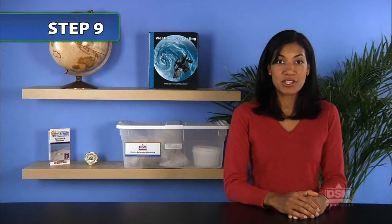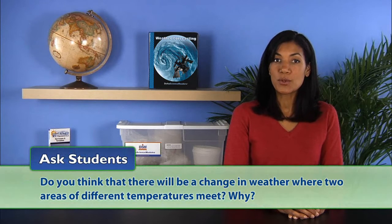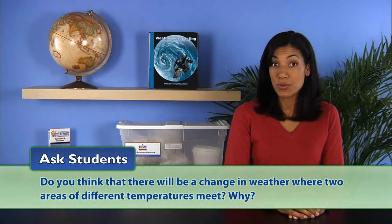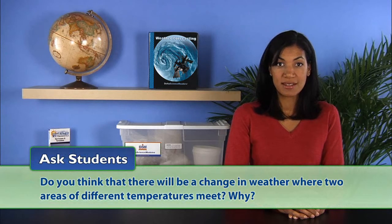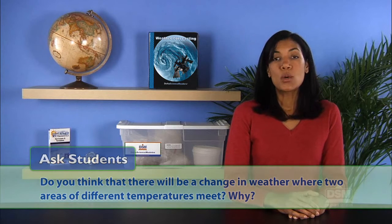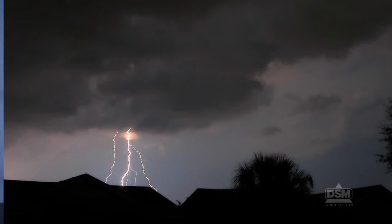To begin a discussion of the type of weather expected where two air masses of different temperatures meet, ask: do you think there will be a change in weather where two areas of different temperatures meet? Remember that cold air in a high-pressure area flows to fill a warm, low-pressure area. As masses of air move, winds are created and the weather often changes. Winds are associated with storms and often precede them.